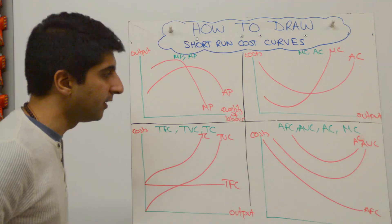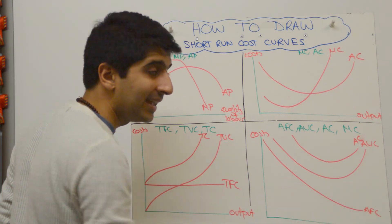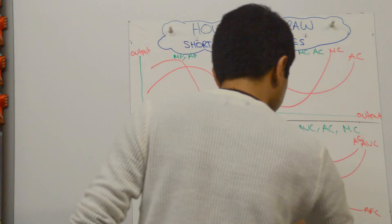And then your marginal cost, which must cut AVC at its lowest point and AC at its lowest point as well. All right, so something like that is going to be the marginal cost.